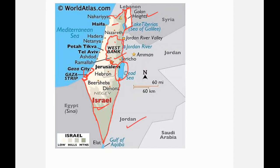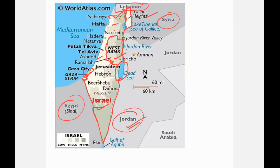Here is the Jordan River, which forms the boundary between Israel and Jordan. Remember the countries bordering Israel: Egypt, Jordan, Syria, and Lebanon. Israel is also bordered by the Mediterranean Sea. This is all about the geography of Israel.